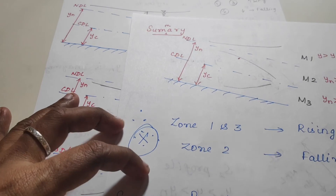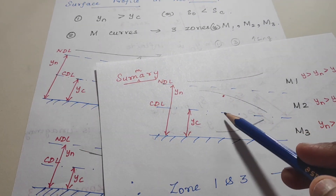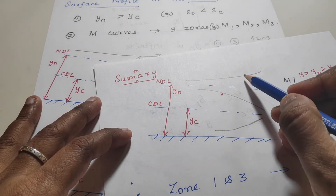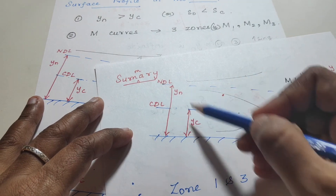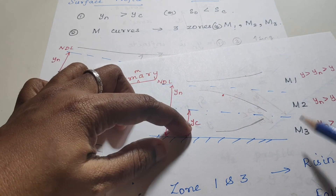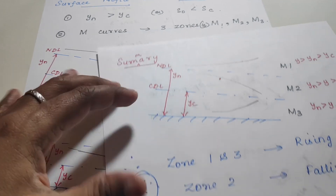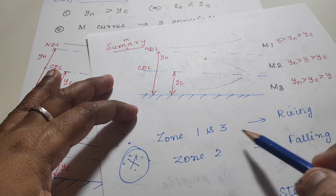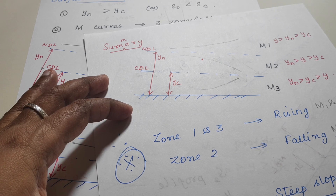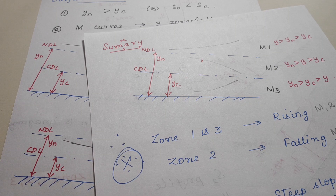To summarize: draw the channel with its normal depth line and critical depth line. M1 condition: y > yn and yc. M2 condition: yn > y > yc. M3 condition: yn > yc > y. Zones 1 and 3 (M1 and M3) are rising profiles; zone 2 (M2) is a falling profile. Next, we will look at the steep slope conditions.